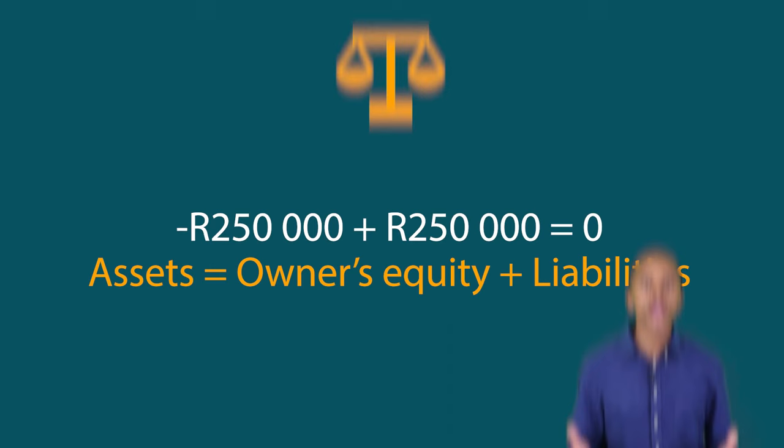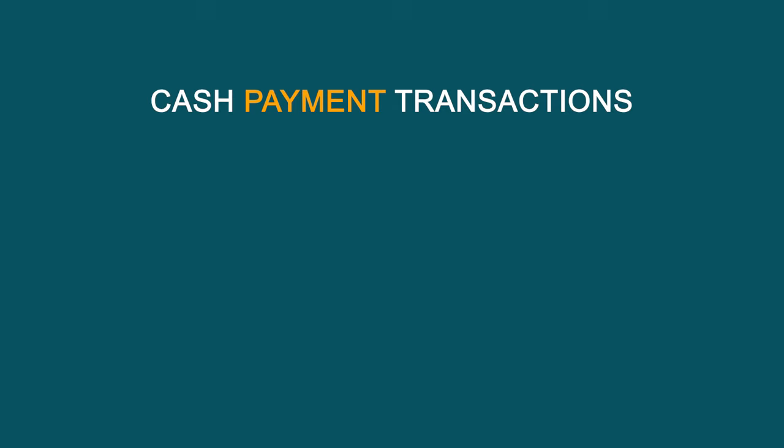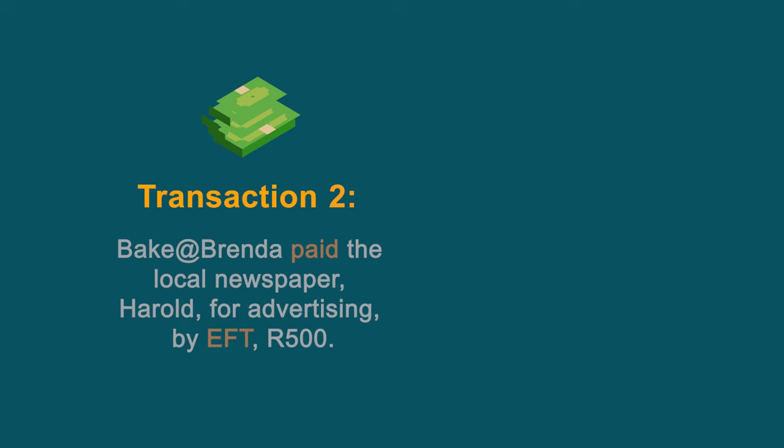As you can see, the accounting equation is balanced. A tip for Grade 8 learners: if you see that the accounting equation doesn't balance, just go back to the example and work through it again to see where you made your mistake. Now let's move on to the second transaction.